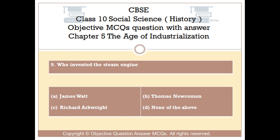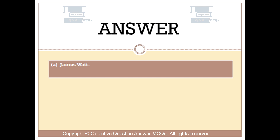Question number 9. Who invented the steam engine? Option A, James Watt; Option B, Thomas Newcomen; Option C, Richard Arkwright; Option D, none of the above. The right answer is Option A: James Watt.